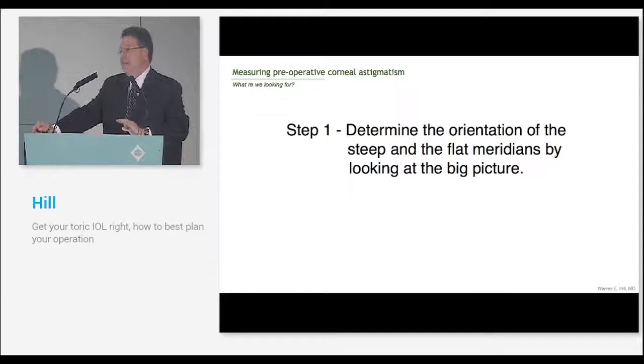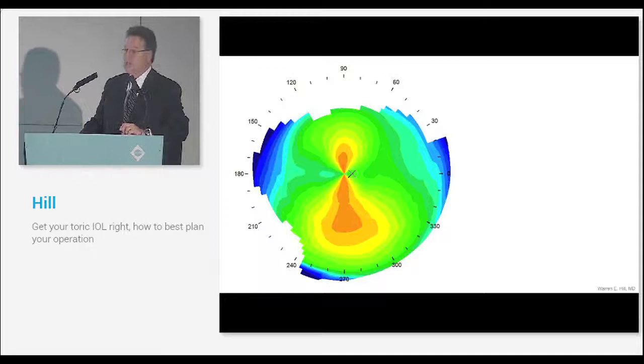I'll let you in on a little secret. The Ks used to determine the spherical power of the IOL can be completely different than what you put in the toric calculator. The toric calculator doesn't care about the absolute value. It cares about the difference. This is an insight into how the toric calculators work.